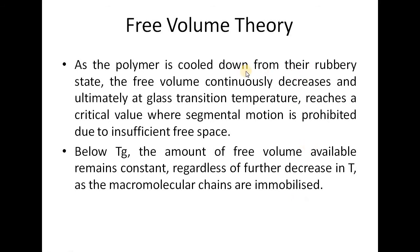As the polymer is cooled down from the rubbery state, the free volume continuously decreases and ultimately at the glass transition temperature it reaches a critical value where segmental motion is prohibited due to insufficient free space. Below Tg, this value becomes constant, meaning all segmental motion of the macromolecular chains is frozen at Tg. That is why we get a constant value of free volume below the glass transition temperature.